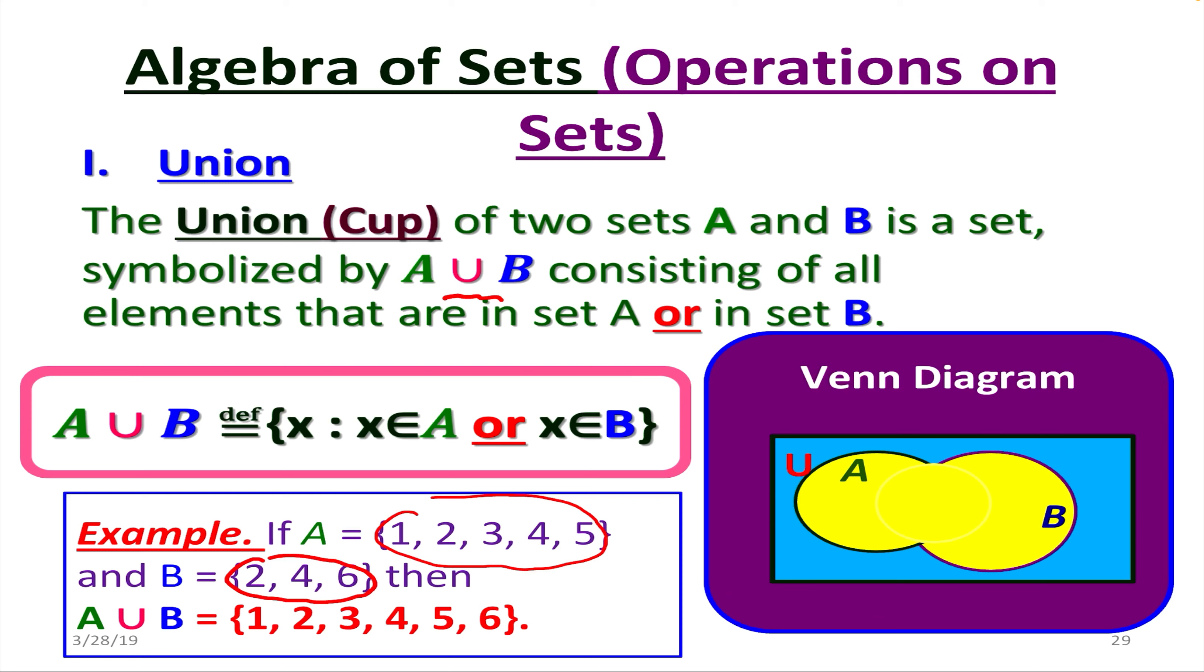Now when it comes to Venn diagram, let's represent this operation, the union. So say we have universal set U, two sets A and B. So for union, it's going to be these parts. So this shaded part, A and B, that's the union.